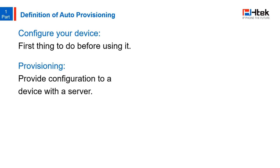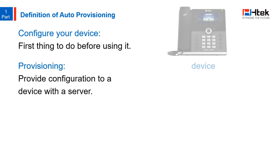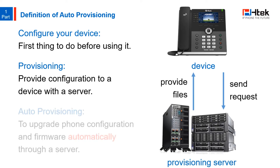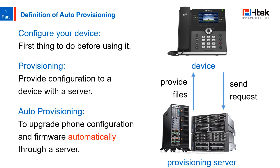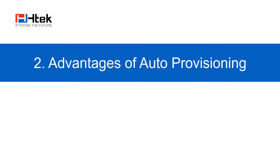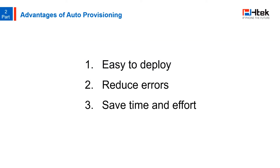Provisioning is to put configuration files on a server, and the device sends a request to the server, then the server provides the files to the device. Auto-provisioning is to upgrade phone configuration and firmware automatically through a server. The advantages of it are obvious — it can realize easy deployment, since auto-provisioning allows a large batch of IP phones to be provisioned all at the same time, remotely and automatically.